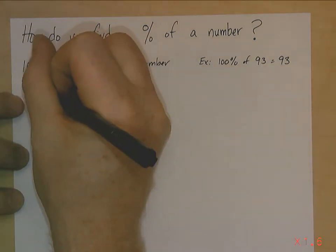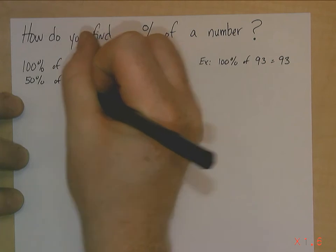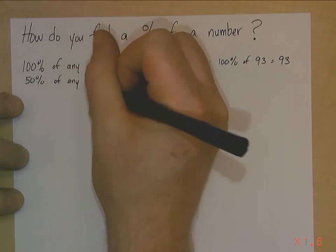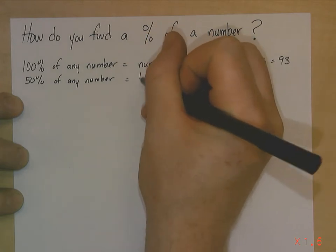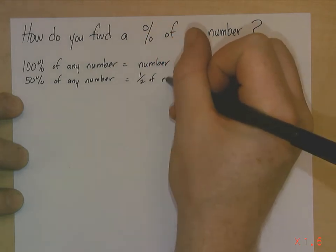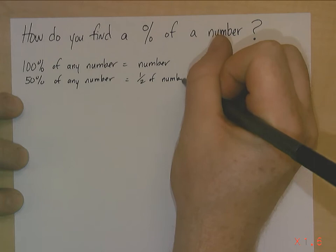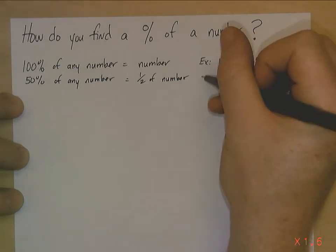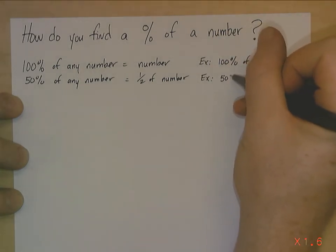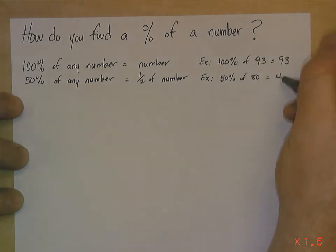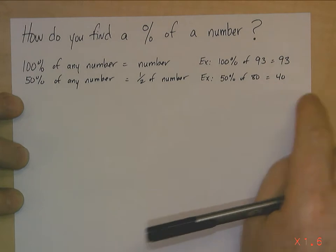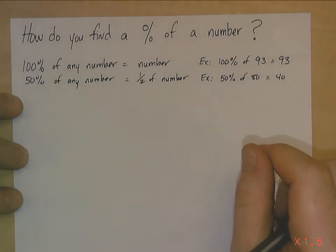50% of a number, of any number, is just one half of that number. So it just equals one half of the number. So we just divide by 2. Example, 50% of, let's say, 80 equals 40. I just take 80 and divide it by 2 because it's half of that number.